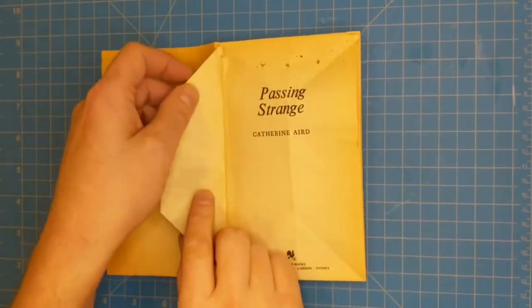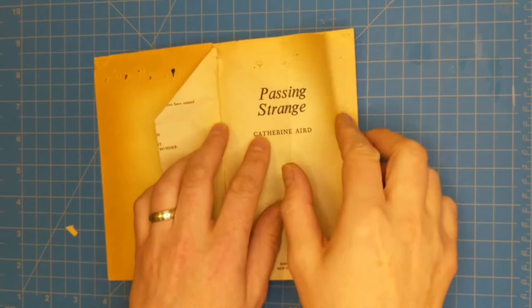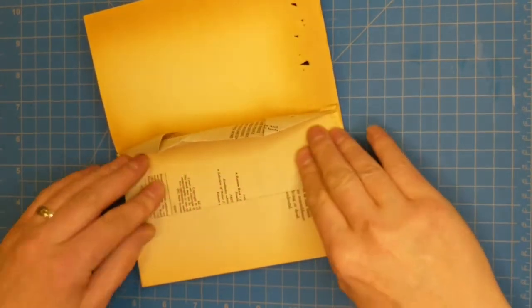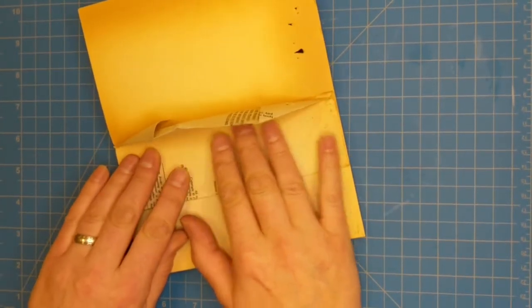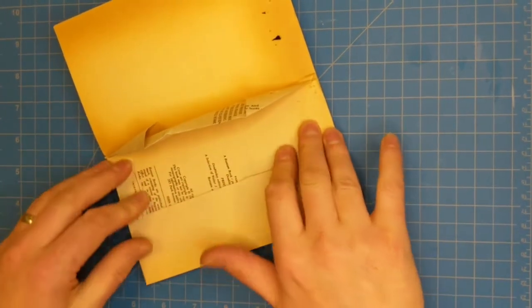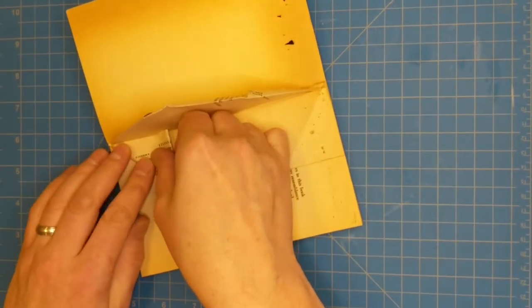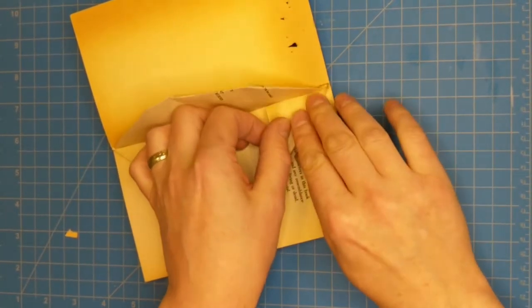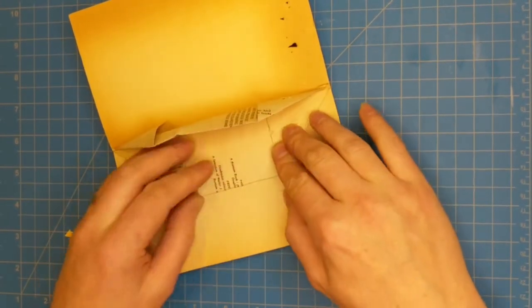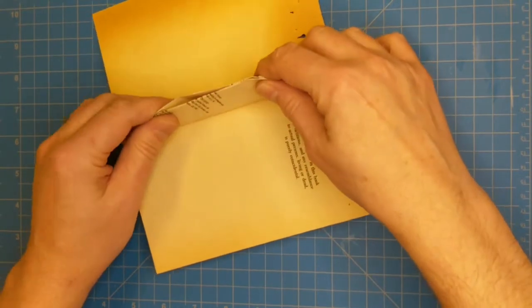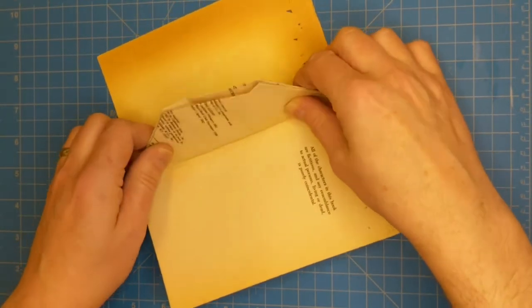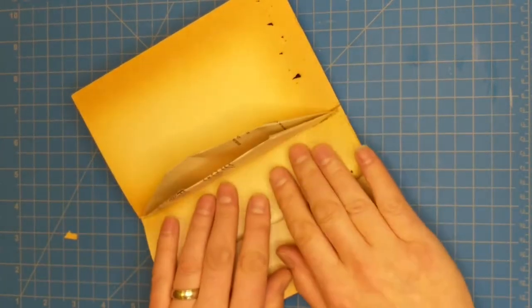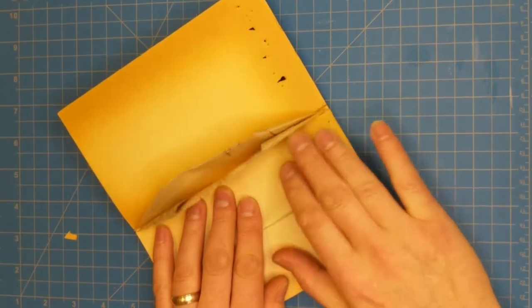Now, you will continue folding every page thereafter in the same manner. So, over in half, and then into the middle. Do the corners. Like that, like so. Continue doing that for every page, all 90 physical pages in your book.